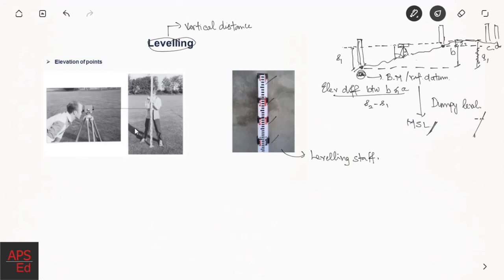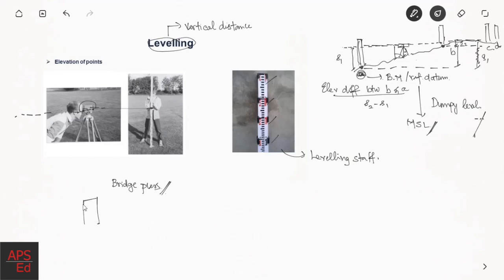Mean sea level is the average level of the oceans measured over the years. As you can see from the picture, sighting happens like this — the surveyor cites the leveling staff and notes down the reading. When you want to sight another point, you just rotate the telescope to that side, cite the other point, and note down the staff reading. This leveling is useful in determining heights — for example, when constructing bridge piers where you have design elevations to fix, measuring the height of a tower, or monitoring settlement that has occurred over the years.